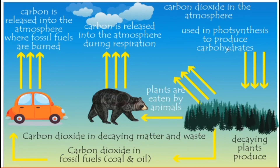Carbon dioxide in the atmosphere is used in photosynthesis to produce carbohydrates. Plants use that carbon dioxide for the photosynthesis process — carbon is taken in during photosynthesis. After that, when plants decay, they produce carbon dioxide back into the atmosphere.